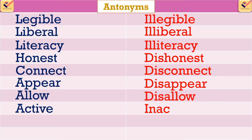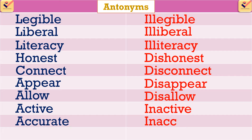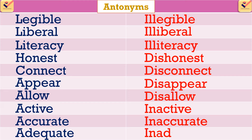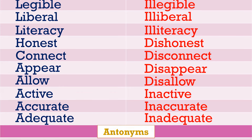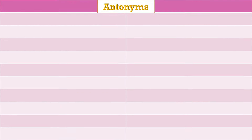Antonyms using the prefix 'in': active – inactive, accurate – inaccurate, adequate – inadequate, correct – incorrect.